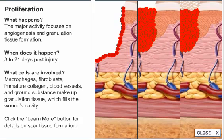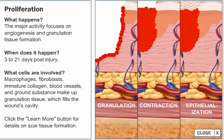Scar tissue formation is characterized by three distinct phases: granulation, contraction, and epithelialization.